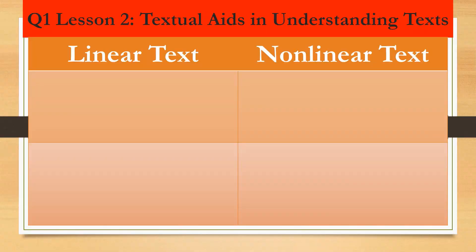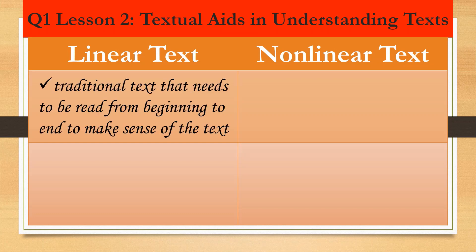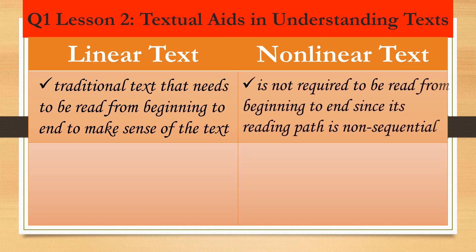So have you heard about linear and nonlinear text? The difference between a linear text and nonlinear text is the reading path, or how we read the information presented to us. A linear text is a traditional text that needs to be read from beginning to end, while a nonlinear text is not required to be read from beginning to end since its reading path is non-sequential.